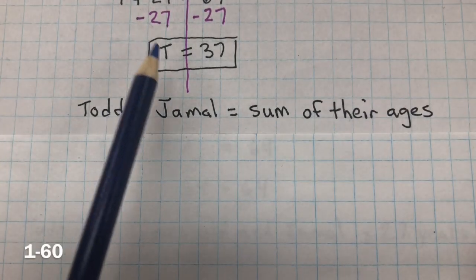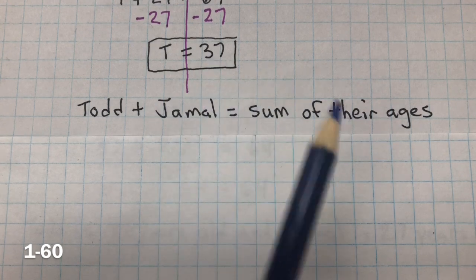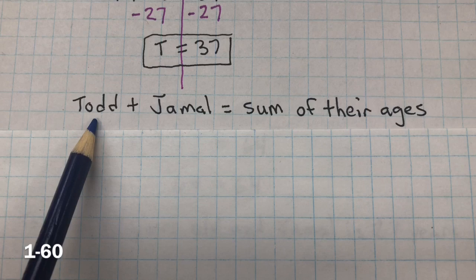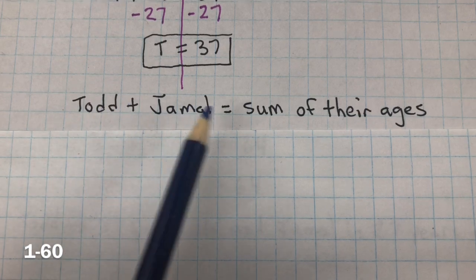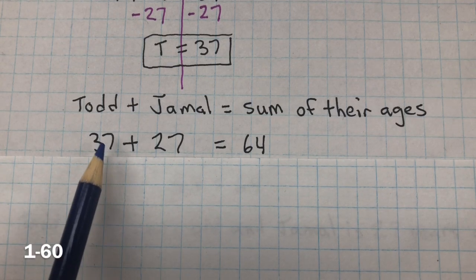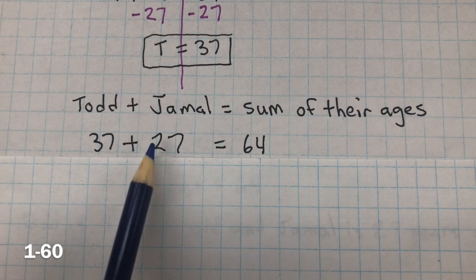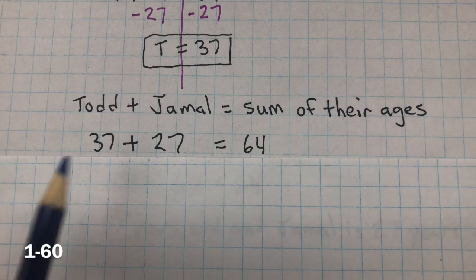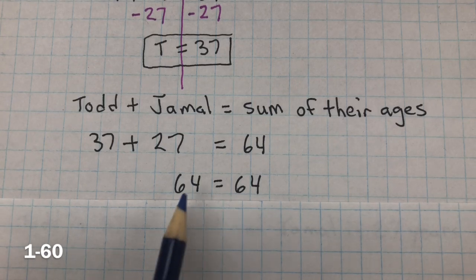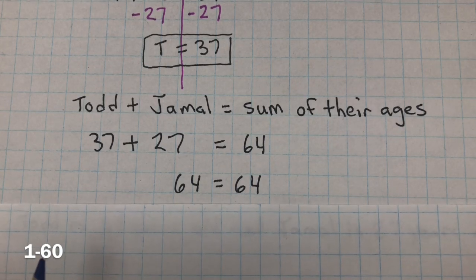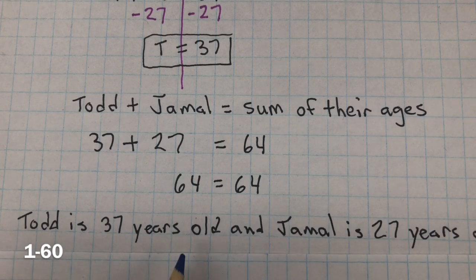So, now we have Todd's age, which is 37 years old. So, now let's make sure that we're correct. We know that Todd's age plus Jamal's age equals the sum of their ages. So, we got 37 for Todd and 27 for Jamal. And that should equal 64. And 37 plus 27 does equal 64. So, that is true. So, Todd is 37 years old and Jamal is 27 years old.